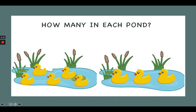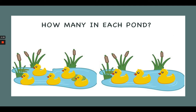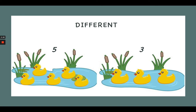Now let's look at these ponds. Count how many are in pond 1 and how many are in pond 2. Work out if they have the same amount or different. Pause the video if you need extra time. Call out whether the ponds have the same or different amount of ducks in 3, 2, 1. That's right, well done! They have different amounts. Pond 1 has 5 ducks and pond 2 has 3 ducks. Let's count pond 1: 1, 2, 3, 4, 5. Pond 1 has 5 ducks. Now let's count pond 2: 1, 2, 3. Pond 2 has 3 ducks, which means the ponds have different amounts.